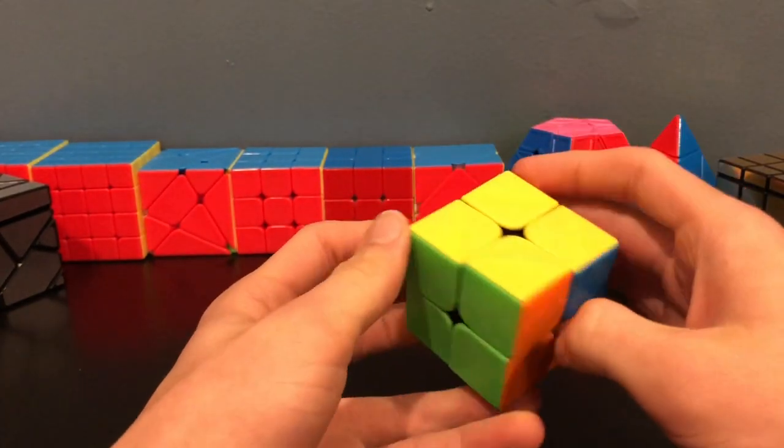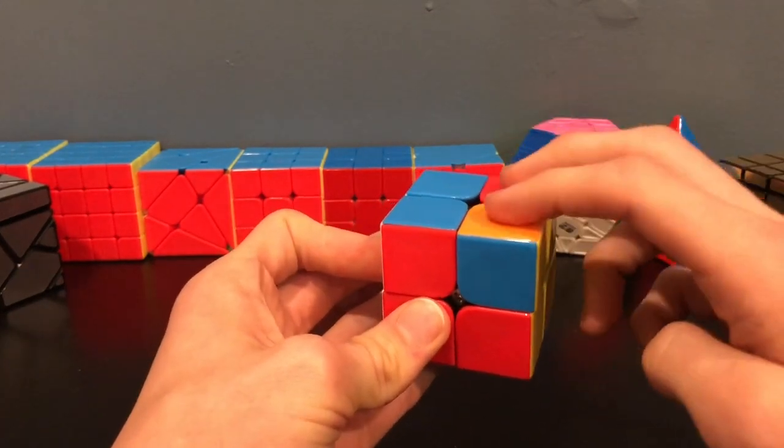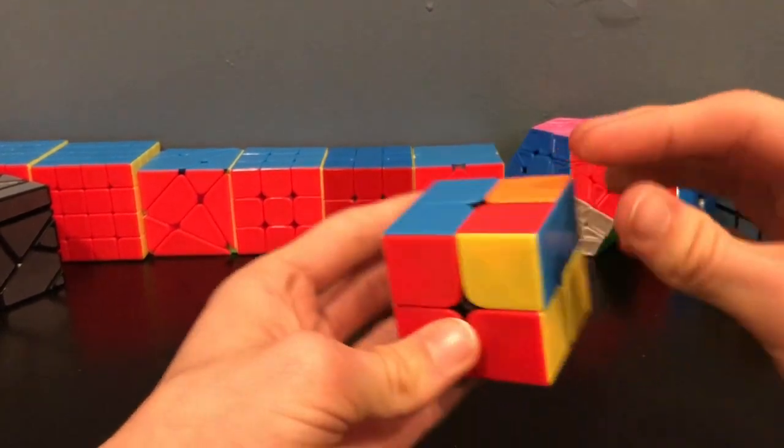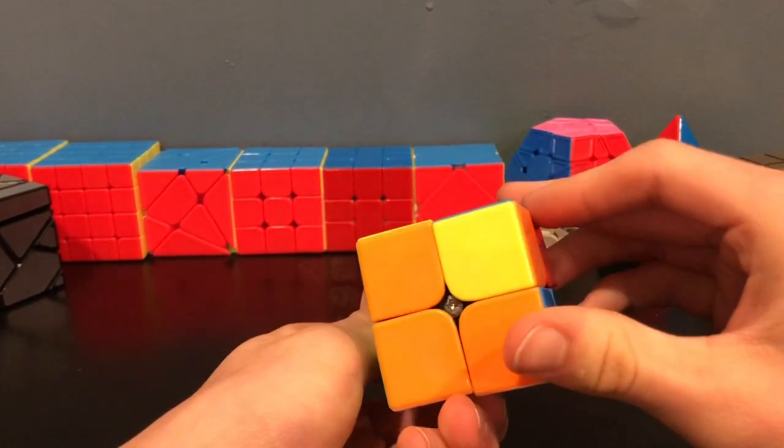Now if we were to hold the cube like this, notice now it's these pieces that will be kept up. If we do it again, then the T-PERM will provide a different result than if we were holding it like this.